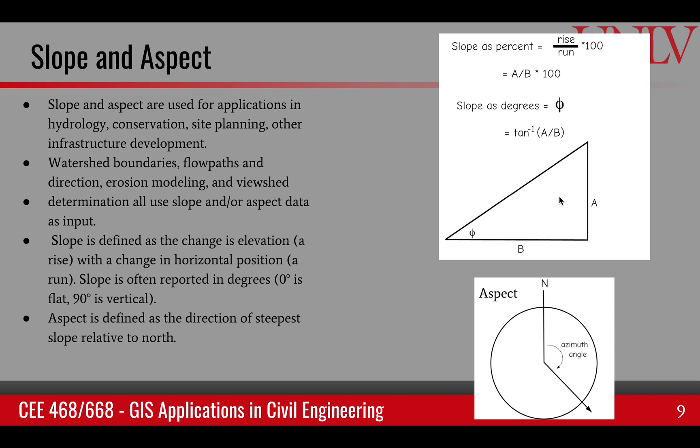Typically the slope is given in two ways. It can be given as percent of the rise over run, or it can be given as an angle. The angle would vary zero degrees for flat and 90 degrees for vertical.